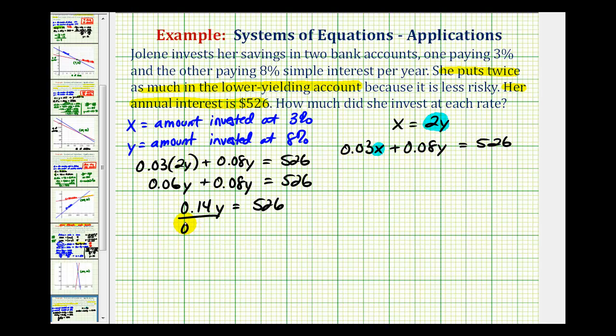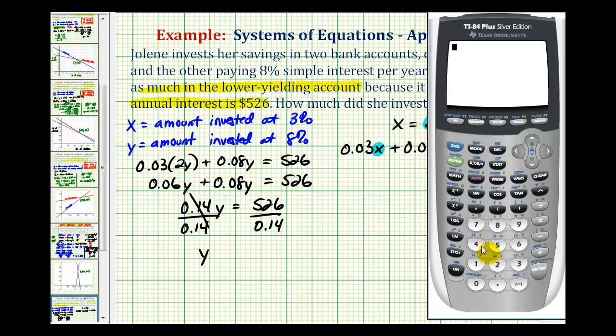Now we'll divide both sides by 0.14. This quotient will give us the amount of money invested at 8%. So 526 divided by 0.14. We're going to go ahead and round this to the nearest cent. So this is going to be approximately 3,757 dollars and 14 cents.